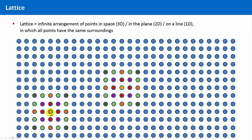And this point also has the same surroundings. It should be clear why a lattice has to be infinite according to its definition: because a point at the border does not have the same surroundings as a point at the center. Therefore, there must be no border.